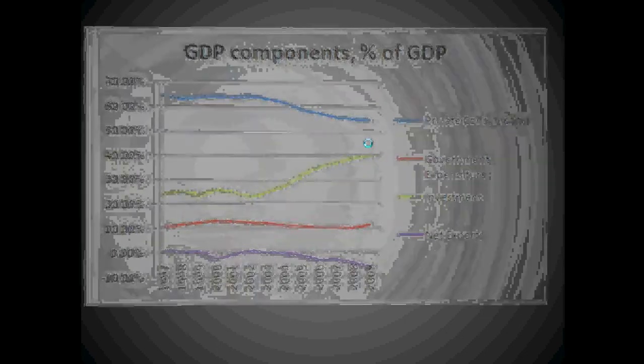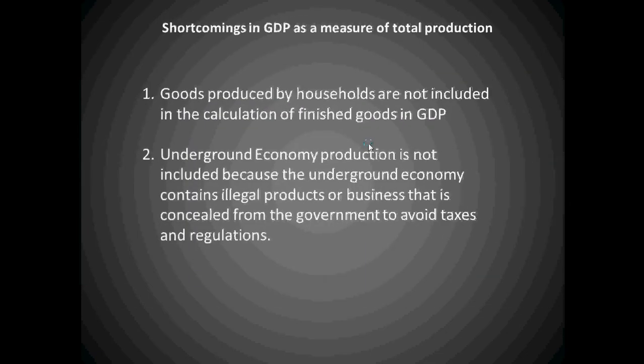Shortcomings in GDP as a measure of total production: two factors are important to keep in mind. Goods produced by households are not included in the calculation of finished goods and GDP, so overall there might be more production in the country than GDP accounts for. Also, underground economy production is not included, because the underground economy contains illegal products or business that is concealed from the government to avoid taxes and regulations — including illegal sales of narcotics, stolen products, and bootleg materials.